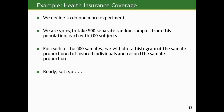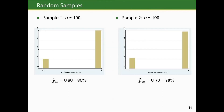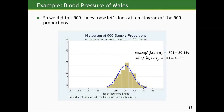Now we repeat this, taking 500 separate random samples each with 100 subjects. Two sample results: 80% and 78% had health insurance, respectively. Looking at the histogram of 500 sample proportions, we now see real evidence of being roughly symmetric and bell-shaped. A true normal curve with the same mean and standard deviation fits on top, and it's not a bad fit. The mean of these 500 sample proportions is 80.1%, and the standard deviation is 4.1%.